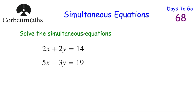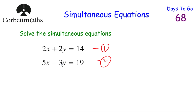Now let's have a look at the next question — this one is for you to try, so feel free to press pause now. The equations are 2x plus 2y equals 14 and 5x minus 3y equals 19. I'd call them equation 1 and equation 2. We could multiply the top by 5 and the bottom by 2 to get 10x and 10x. Alternatively, I could multiply the top equation by 3 to get 6y, and the bottom equation by 2 to get minus 6y. And minus 6y plus 6y would be 0.